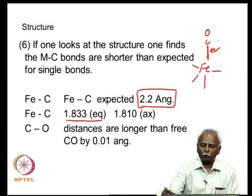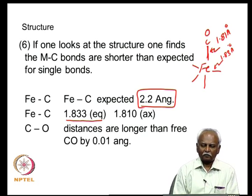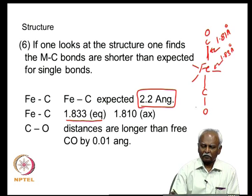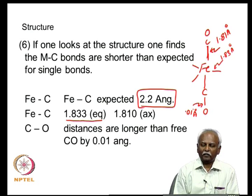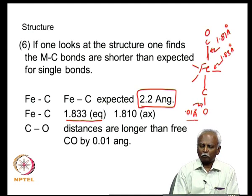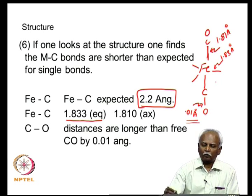The axial Fe-C bond is 1.81 Å and the equatorial bond is 1.83 Å — both shorter than the single-bond expectation. The carbon-oxygen distances are longer than in free carbon monoxide by about 0.01 Å. So two things need to be explained: the shorter-than-expected metal-carbon single bond distance, and the slight elongation of the carbon-oxygen bond.